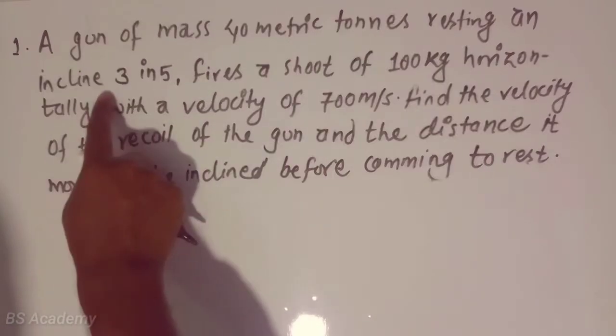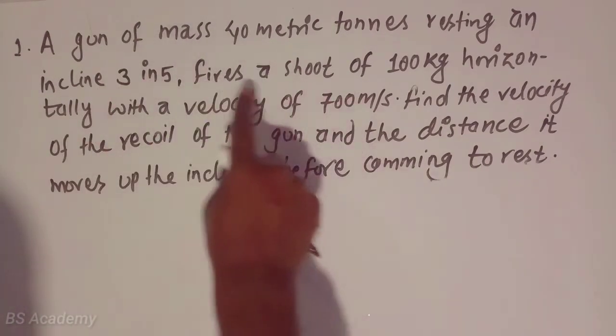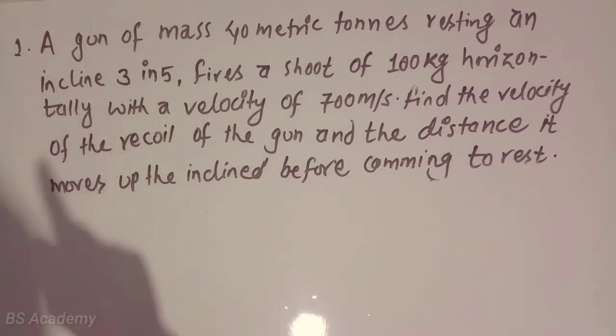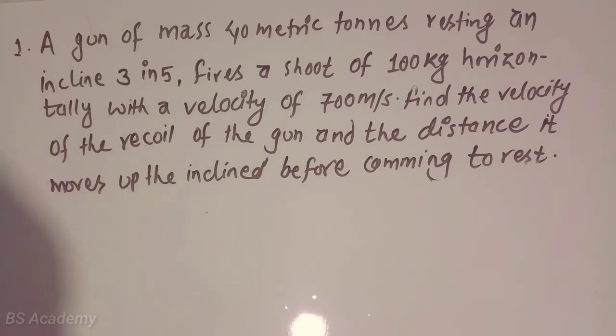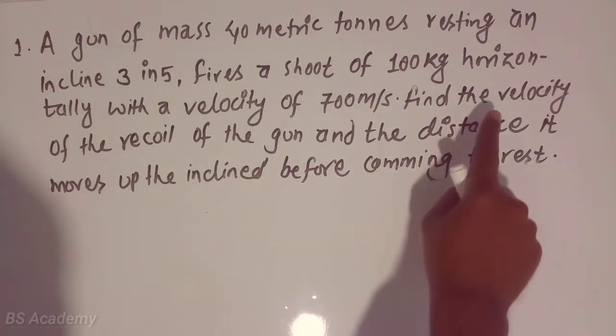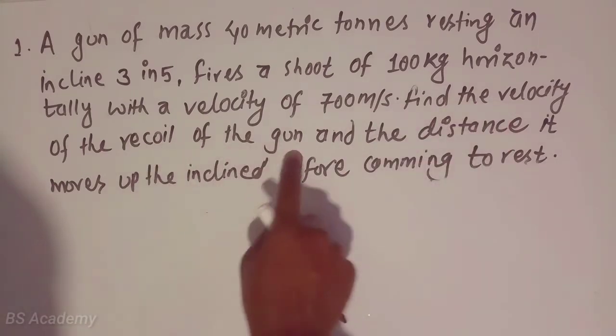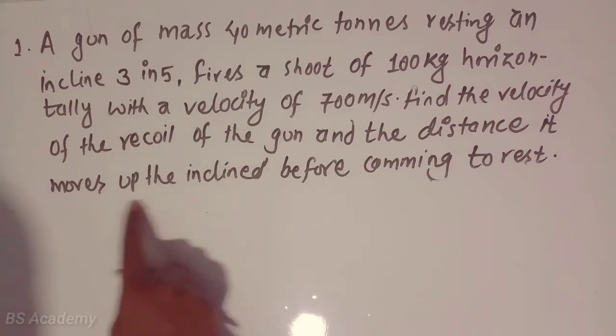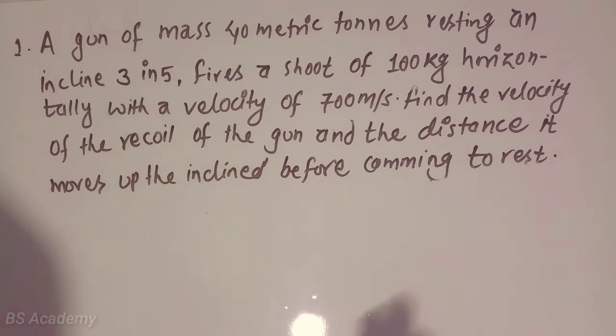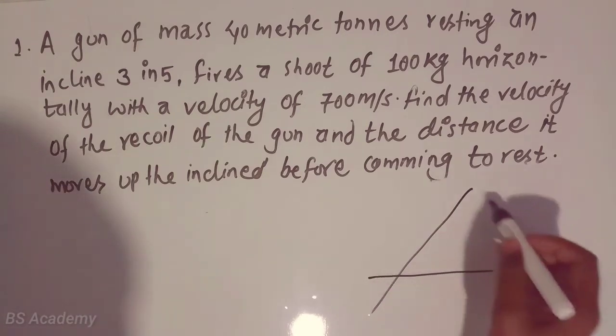This is an important thing in this question we have to understand carefully. The gun is resting on incline 3 in 5, but fires the shot horizontally. This is the important thing we have to notice carefully. Then we have to calculate the velocity of the recoil of the gun and the distance it moves up the inclined before coming to rest.